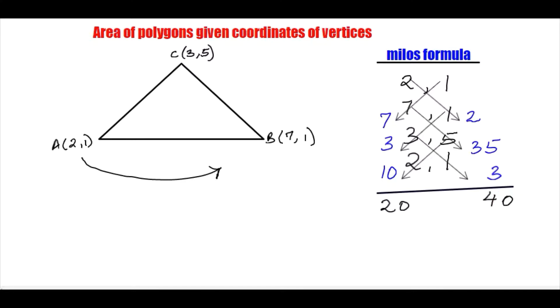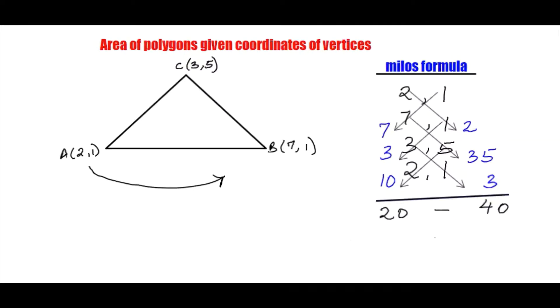So then the next thing is I will subtract the two. Now for area, we will have a half. We shall multiply by the absolute value of 20 minus 40.